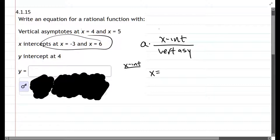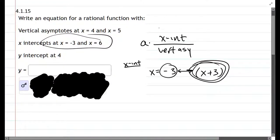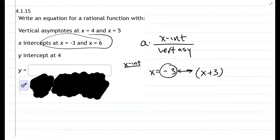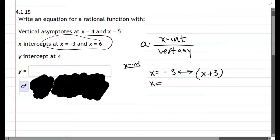So we have x equals negative three. Now that corresponds to the factor x plus three, and one of the best ways to remember that is negative three is the value that turns that into zero. The other one is x equals six, and that corresponds to x minus six.